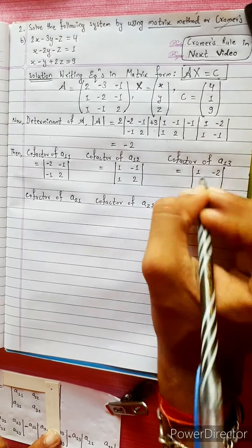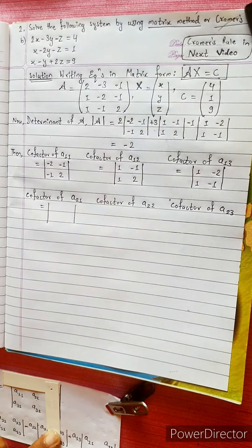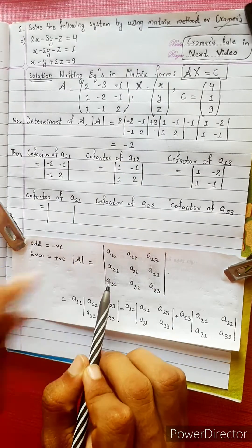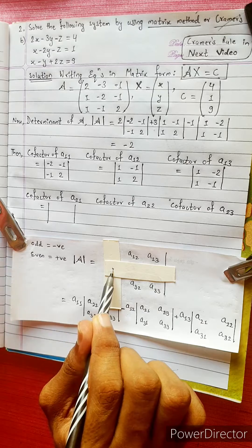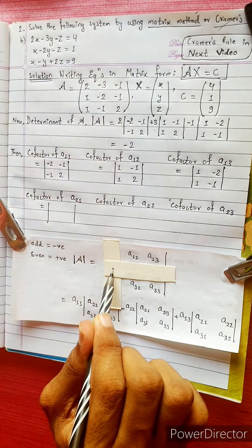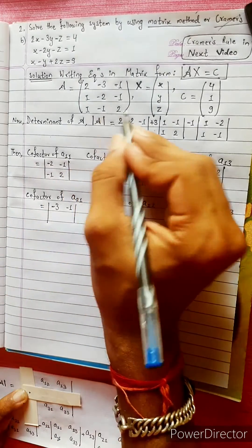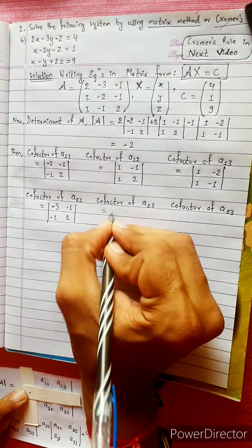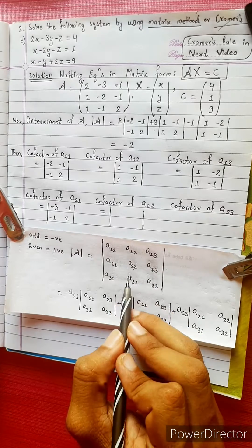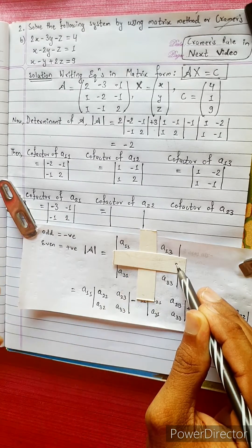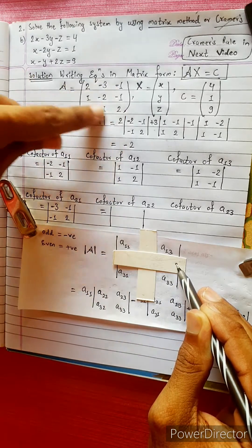The values are: 1, minus 2, 1, minus 1. Now we have A21. This is A21. Now we have A12, A13, A32, A33. Now we compare the values. We have A12, A13, A33. Now A12 gives: 1, minus 2, minus 1, minus 1, minus 2.